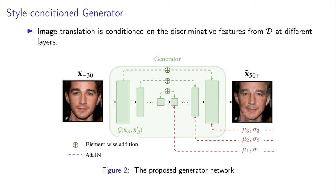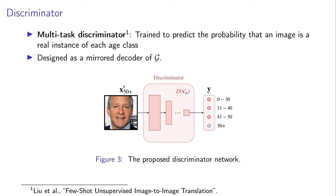We use UNET-like symmetric skip connections from the encoder to the decoder, as we find that this helps with preserving high-frequency information in the translated images. This is vital for age progression, since we need to preserve the identity of the input image. We use a multi-task discriminator to predict the probability that a given image is a real instance of each age class, thus capturing discriminative representations with respect to both the realness of the image and the age.